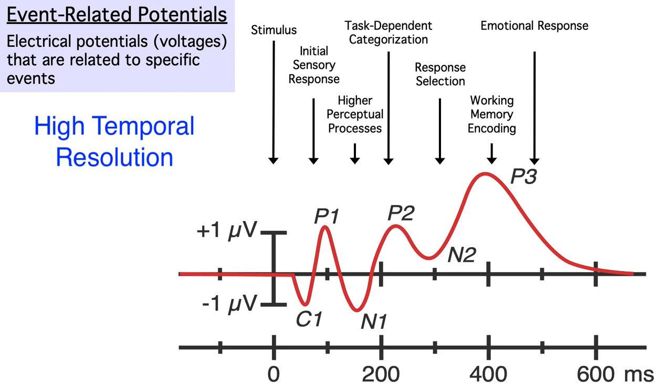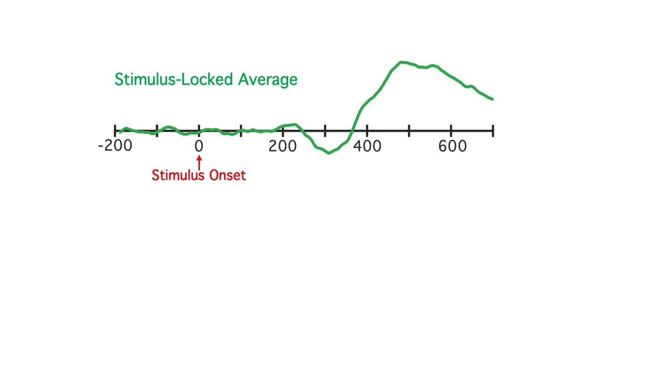However, the ERP technique has poor spatial resolution. If you want to know where in the brain something happened, fMRI is usually much better.